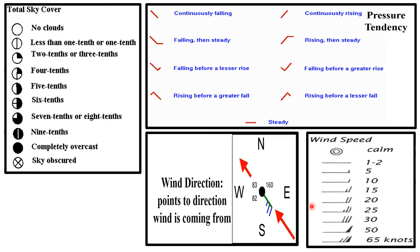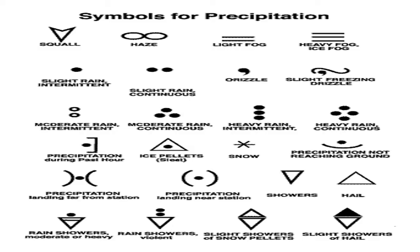For wind speed, an example would be for 15 knots. We would use a long flag representing the 10 and a short flag representing the 5. The symbols for current weather are shown here. For example, the symbol for snow is an asterisk.